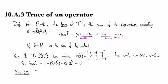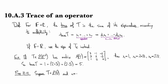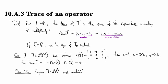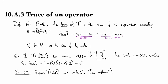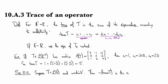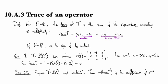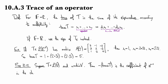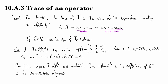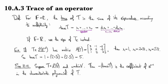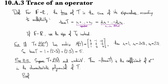Proposition 10.12: Suppose T is a linear operator on V, a finite-dimensional vector space with dimension n. Then the negative of the trace of T is the coefficient of z^(n-1) in the characteristic polynomial.